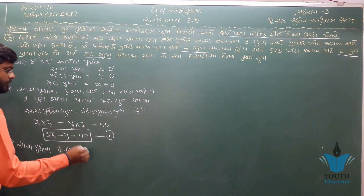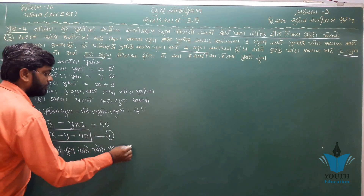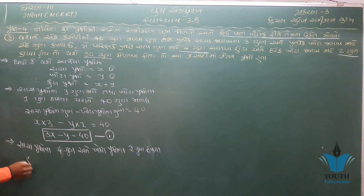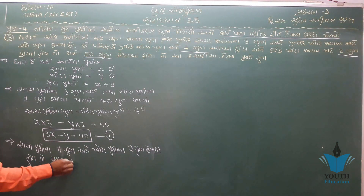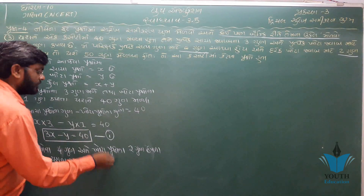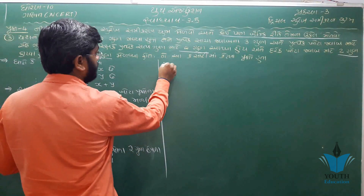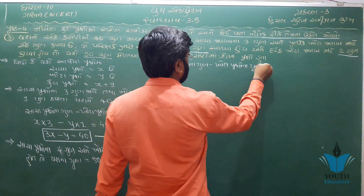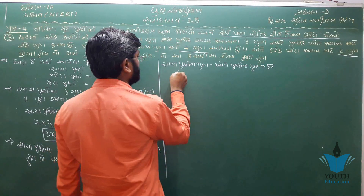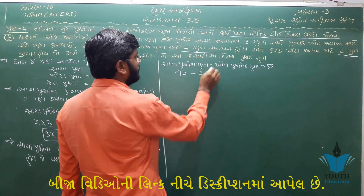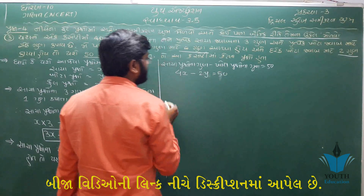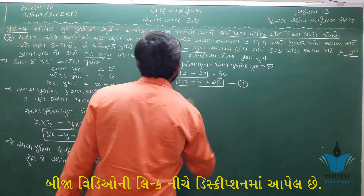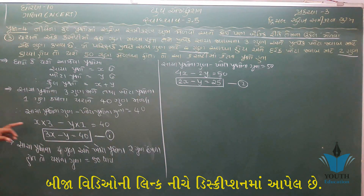ને ખોટા પ્રશ્નના બે ગુણ વઈ તો ગુણ કપાતા, તો પ્રશ્નના ગુણ પચાસ થાય. તો સ્ઈ રીતે સાચા પ્રશ્નના ગુણ — સાચા પ્રશ્ન x ચાર, ખોટા પ્રશ્ન y, ત્યારે 2x - y = 25.